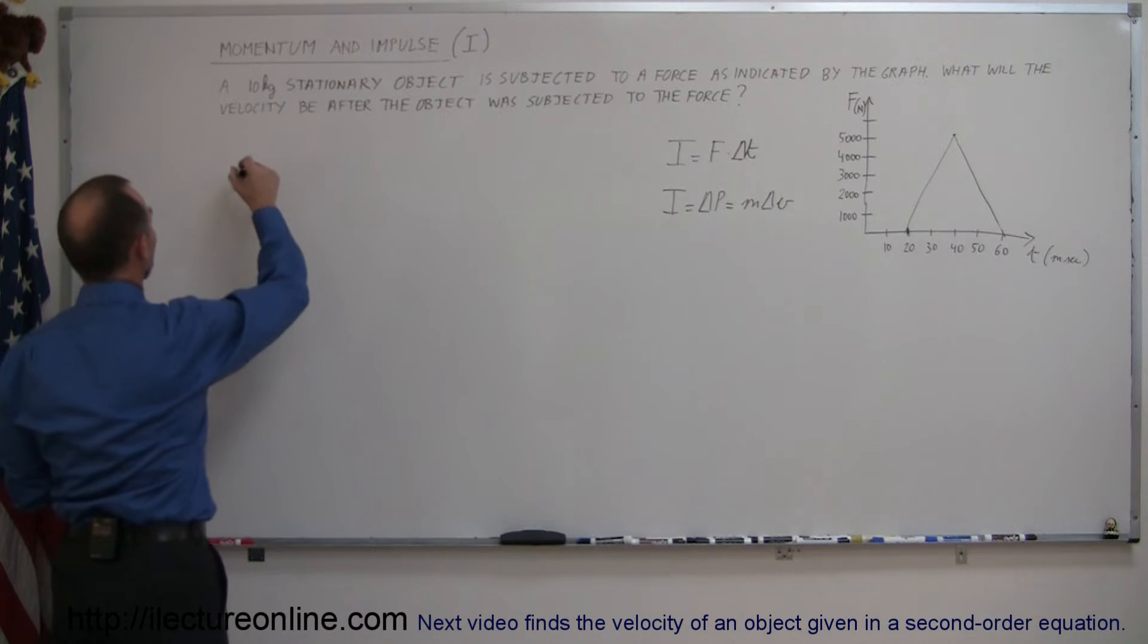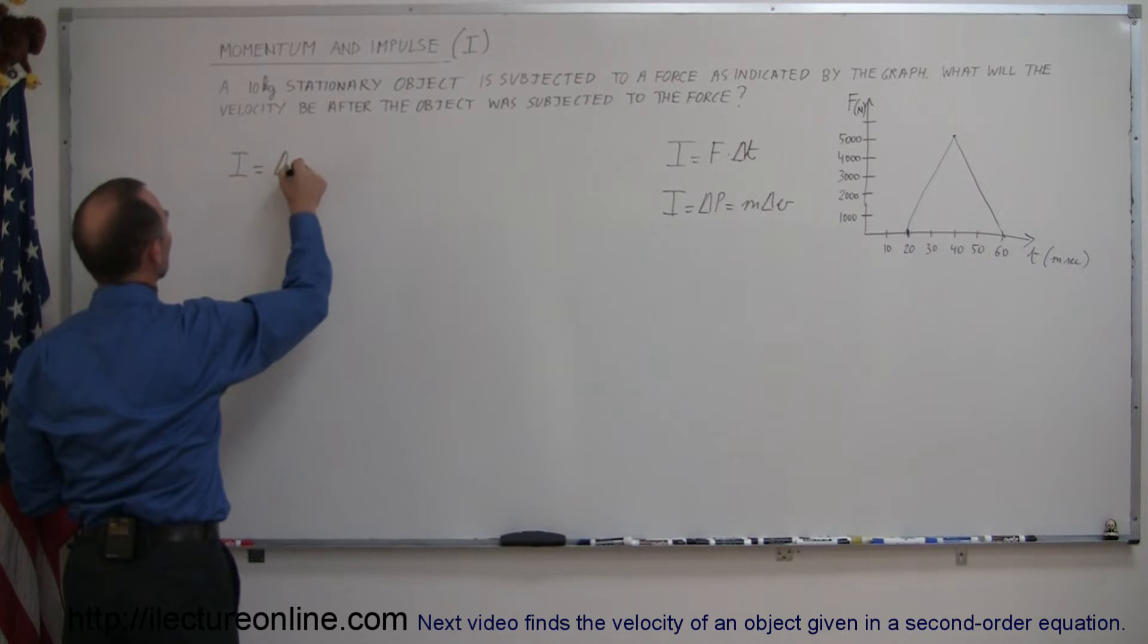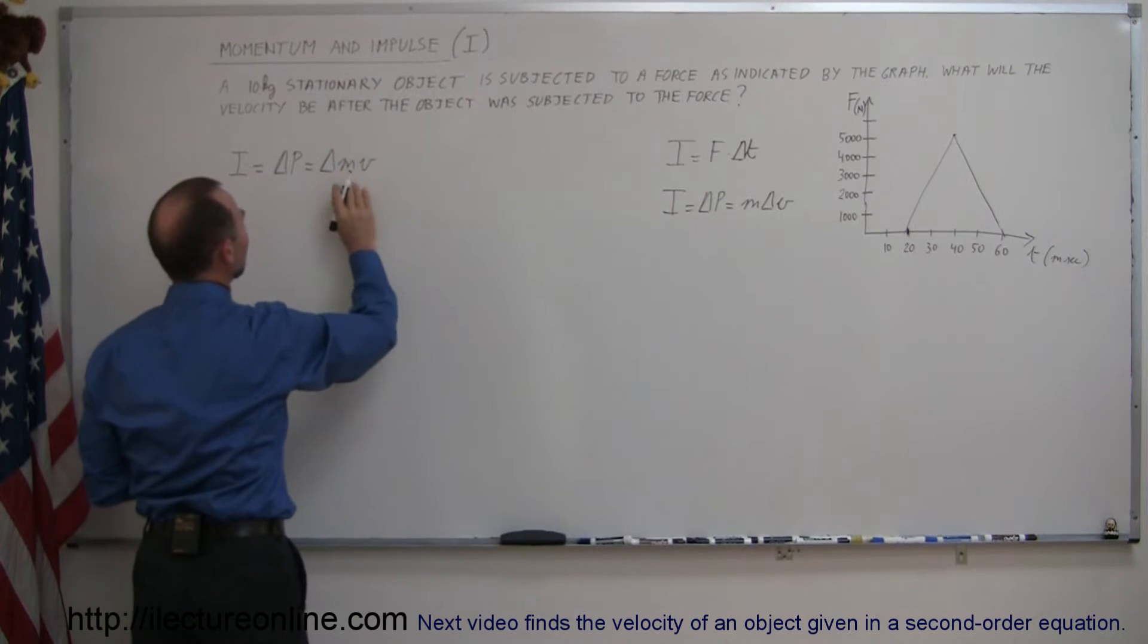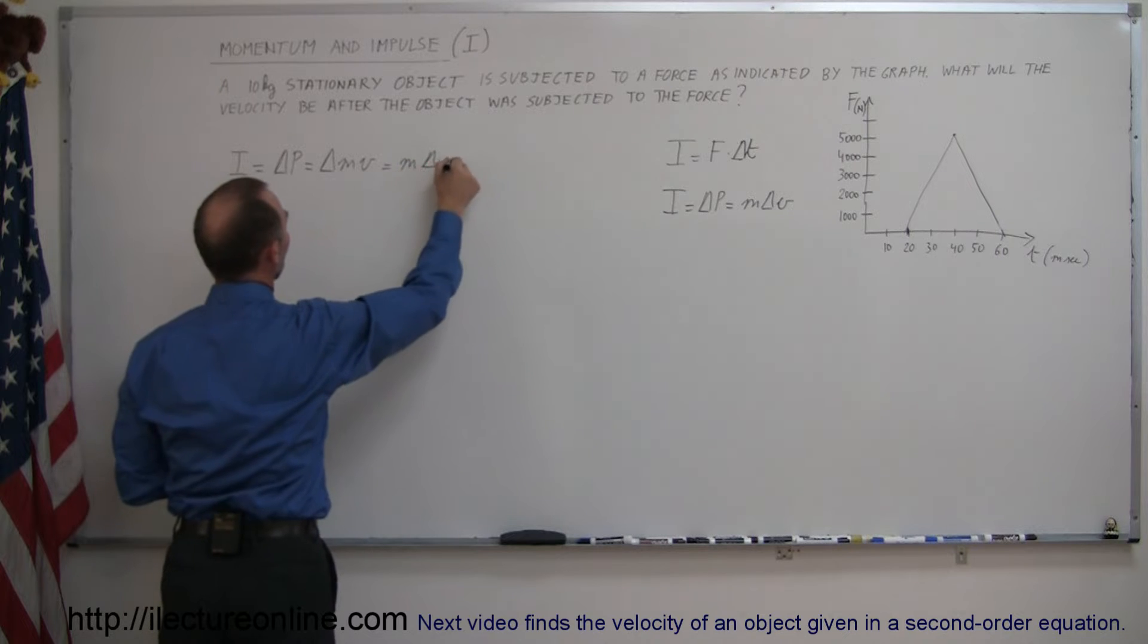So we can say that the impulse is equal to the change in momentum which is equal to the change in the mass times velocity and since the mass is unchanged is equal to the mass times the change in the velocity.